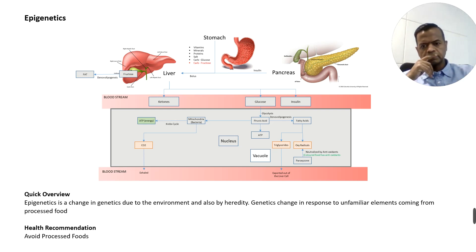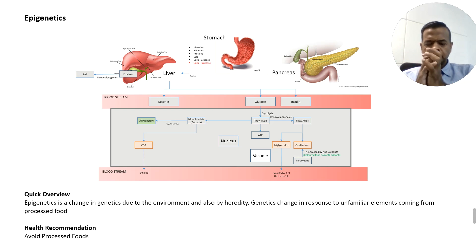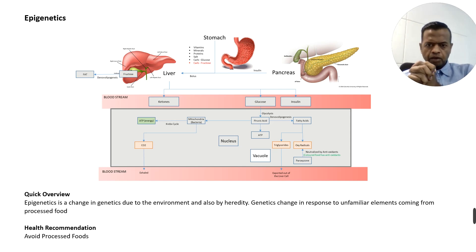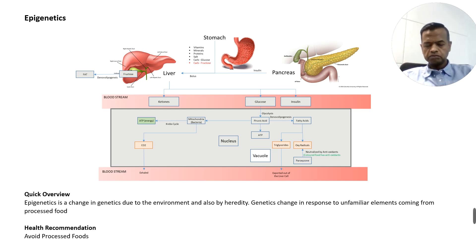The next dysfunction Dr. Lustig talks about is epigenetics. Epigenetics is nothing but the modification of gene functions to be able to adapt to the external environment. The external environment changes that we are primarily imposing on the human body these days is processed foods. When we have too much processed food, the body does not know how to react to it and hence changes its gene functions, which in turn leads to long-term damage to the human cells. So we should avoid processed foods as far as possible.